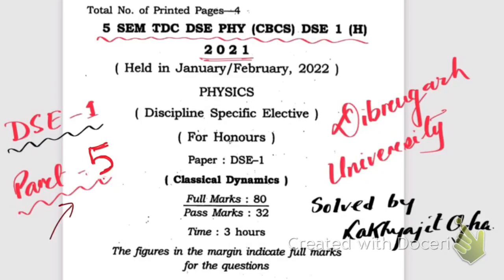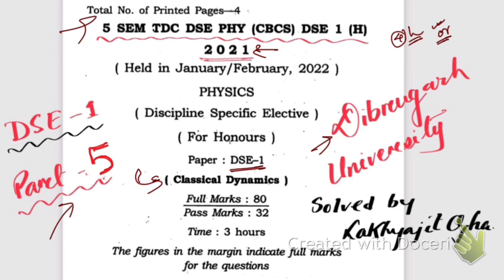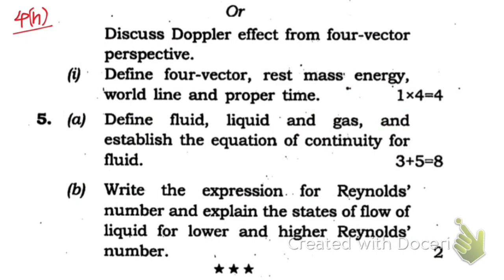Hello friends, this is part 5 of the question paper solution for Classical Dynamics DSE Paper 1, 2021, fifth semester at De Brugge University. We have already solved up to question 4h. There were two questions in 4h — the first one was already solved in the previous part, and now we're going to start solving from the second part, 4h.